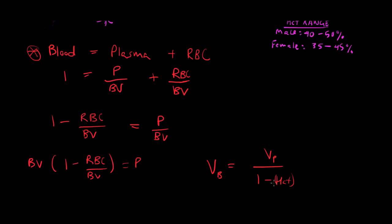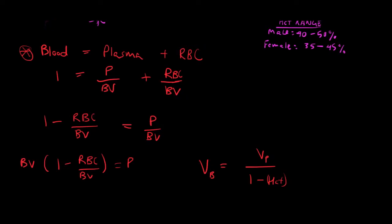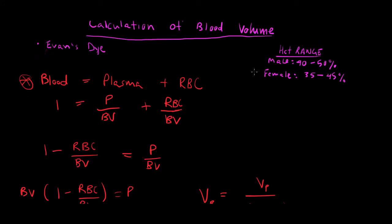Hematocrit is simply the fraction of red blood cell volume over blood volume. The typical hematocrit range is 40–50% for males (about 50% of blood volume is red blood cells) and 35–45% for females. Evans Blue, with its high affinity for serum albumin, stays in the vasculature and allows us to measure plasma volume from blood concentration measurements. This equation helps us calculate blood volume from plasma volume.